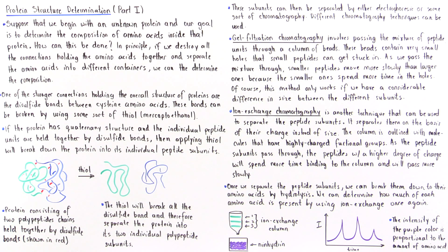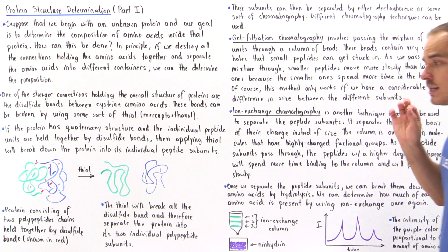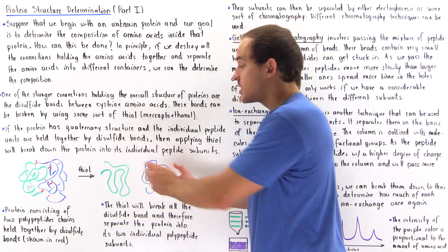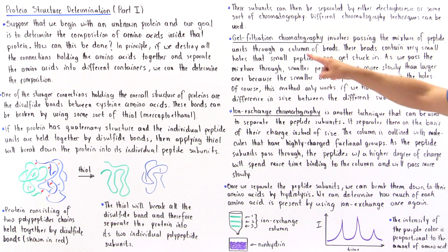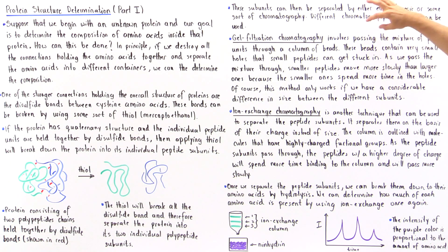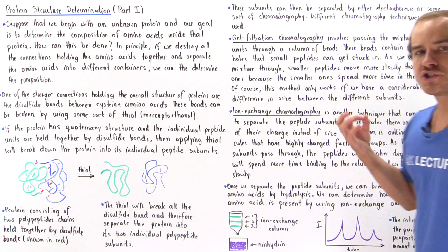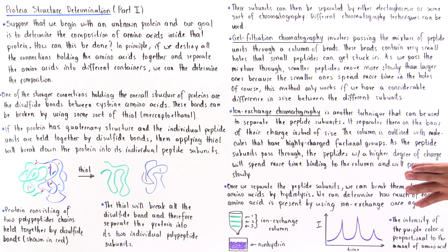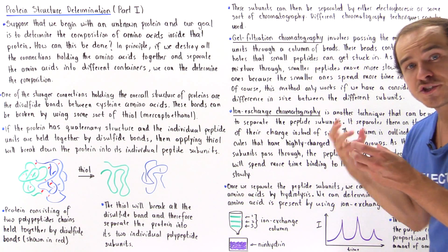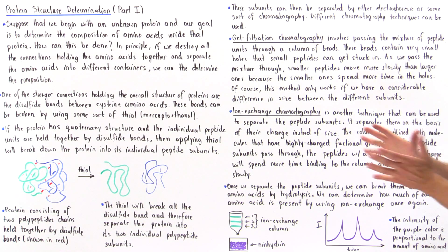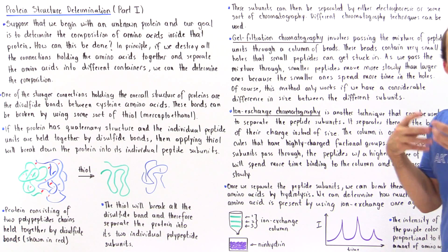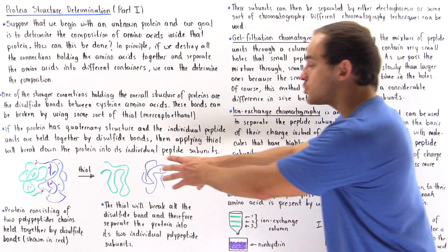We would use gel filtration chromatography only if there is a considerable difference in size between the two polypeptides — the green and the blue one. Gel filtration chromatography involves passing the mixture of polypeptide subunits through a column of beads that have very small microscopic holes, so that small peptides can get stuck within those holes. As the mixture passes through the column, smaller peptides move more slowly than larger ones because they move into those holes and spend more time within them. This technique can only be used when there is a considerable difference in size between the two polypeptides.